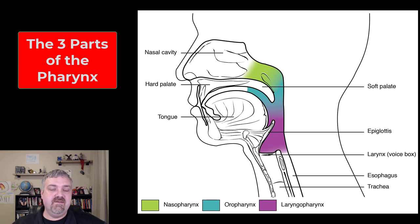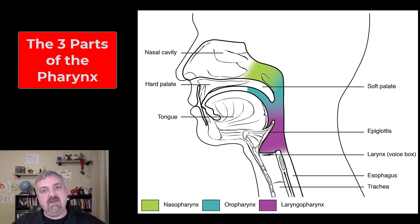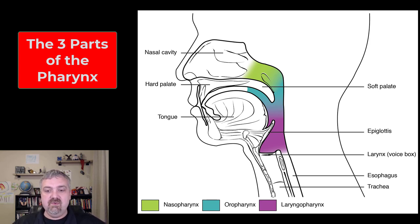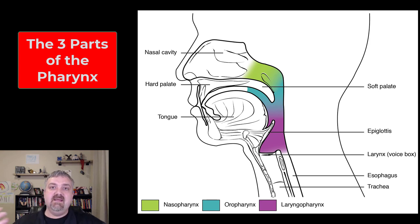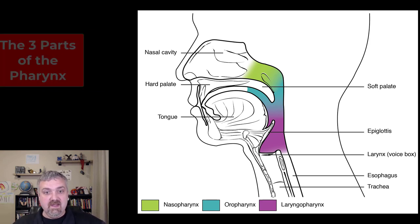As you can see, the pharynx is a shared tube by both your nose and your mouth. It's going to carry food, air, or drink down to either the esophagus if you swallow it — which is part of the digestive system — or the trachea if it's going to head down the rest of the conducting system and get to the gas exchange surface of your lungs.